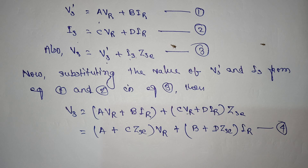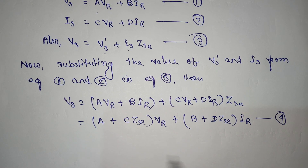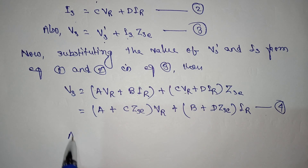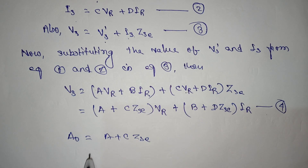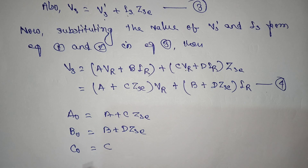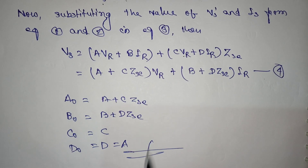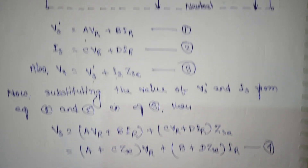Now comparing equation number four with the general expression for voltage and current, we get: A0 is equal to A plus C·Zse, B0 is equal to B plus D·Zse, C0 is equal to C, and D0 is equal to D. This is the complete derivation for the transmission line with series impedance at the sending end voltage.